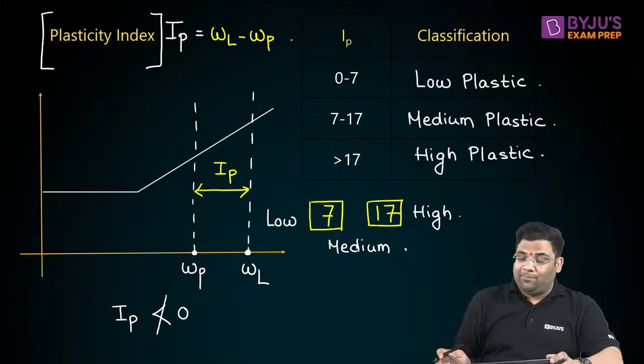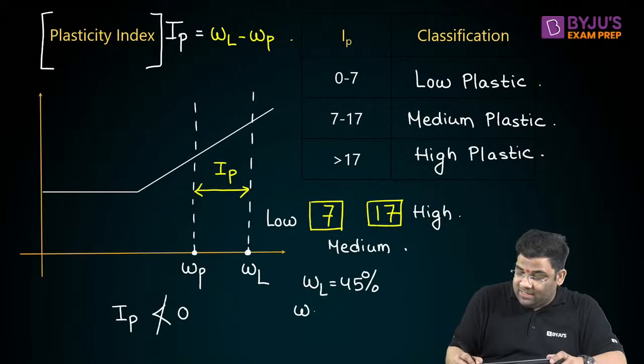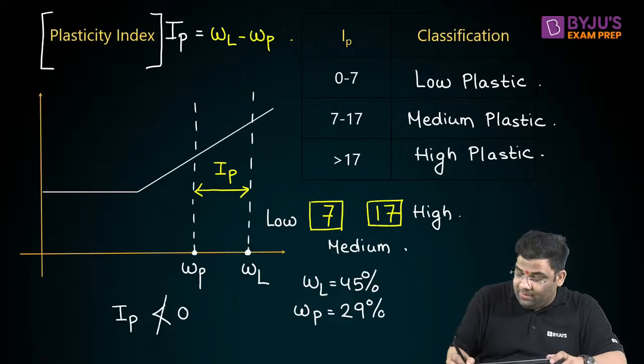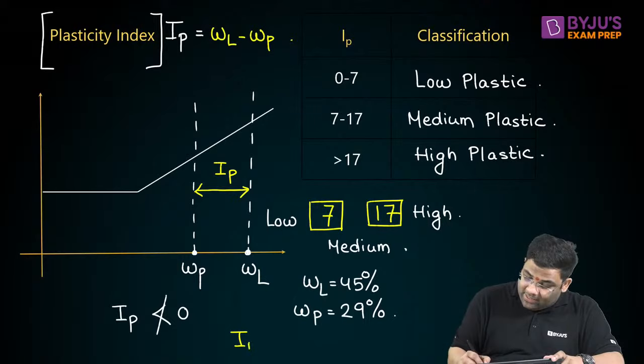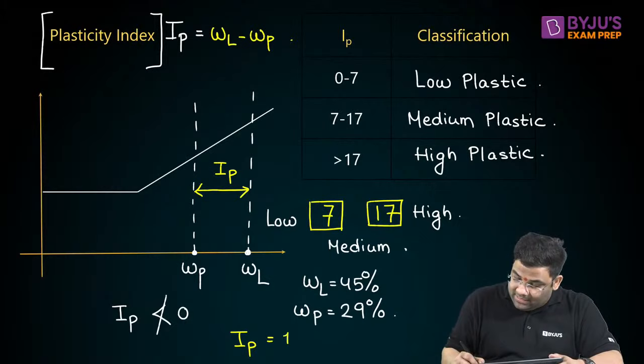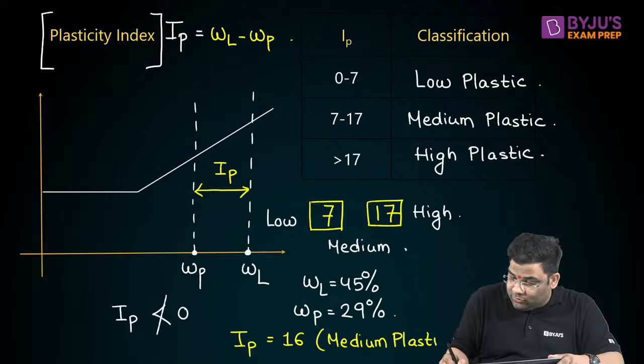For example, if the liquid limit is 45 and the plastic limit is 29, the plasticity index is 16. Since 16 is between 7 and 17, it is medium plastic. Such questions are very easy — they will ask you this in the exam.